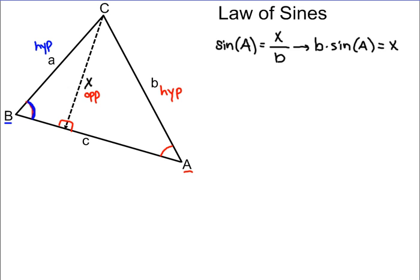We can set up here saying that the sine of angle B is still opposite over hypotenuse, only now the opposite will be X and the hypotenuse will be A.